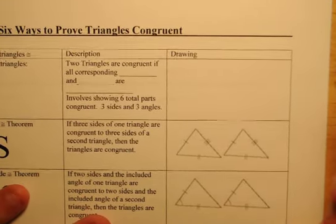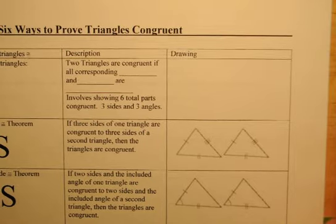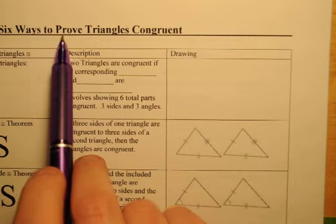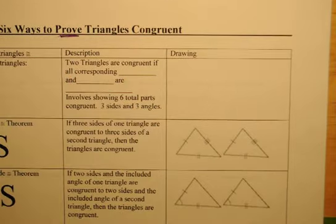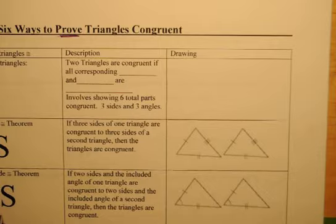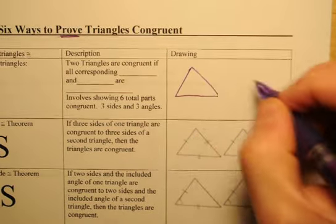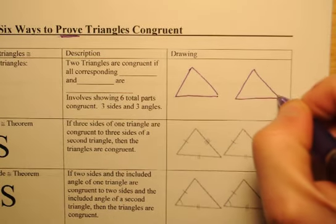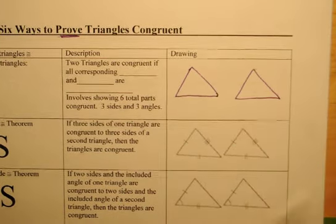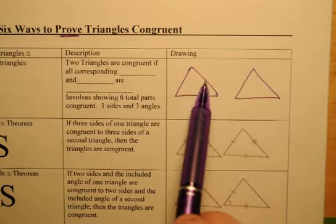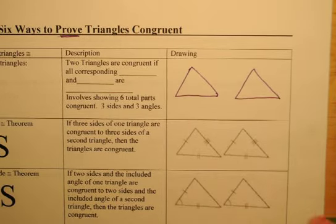Hello, everybody. Welcome to Geometry Topic 5.2. This is ways to prove triangles are congruent. Here we go. Here's what's going to happen: I'm going to give you two triangles, and the question is, are those two triangles congruent? Now, to be congruent, it has to have all sides the same length and all angles the same measure.